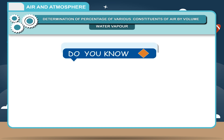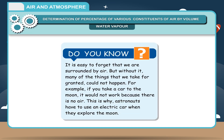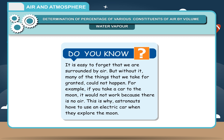It is easy to forget that we are surrounded by air, but without it many things we take for granted could not happen. For example, if you took a car to the moon it would not work because there is no air — this is why astronauts have to use an electric car when they explore the moon.